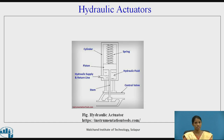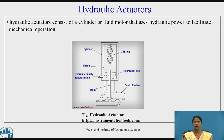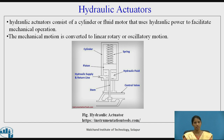Hydraulic actuators consist of a cylinder or fluid motor that uses hydraulic power to facilitate mechanical operation. The mechanical motion is converted to linear, rotary, or oscillatory motion. The schematic diagram of hydraulic actuators shows the fluid placed in the cylinder; a piston is used to compress the fluid, and in this way the actuation occurs.